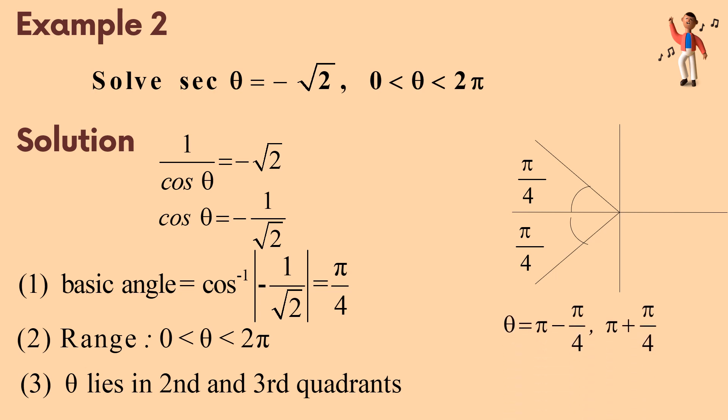So, theta equal pi minus pi over 4 and pi plus pi over 4. We get 3 pi over 4 and 5 pi over 4.